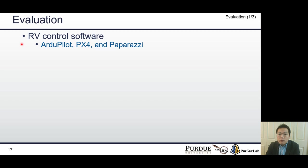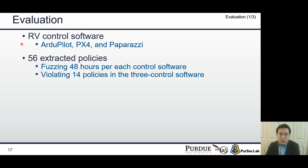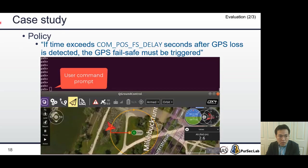We deployed PGFUZZ on three popular RV control software: Ardupilot, PX4, and Paparazzi. We extracted a total of 56 policies. We ran PGFUZZ for 48 hours per each control software. As a result, we found a total of 156 previously unknown bugs.